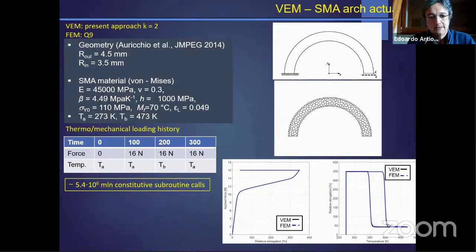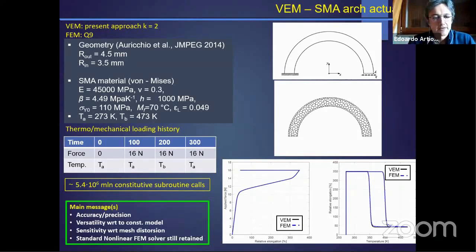Another illustrative example is taken from shape memory alloy materials. It's a simple thermomechanical actuator which exploits both shape memory effect and super elasticity undergoing a thermomechanical loading cycle. And as we can see here, we have a positive comparison with reference solutions as well. So the main message from this quite large gallery of numerical experiments is that we have assessed the method's accuracy, precision, and robustness, its versatility with respect to the chosen constitutive model.